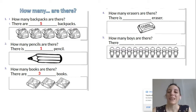How many erasers are there? There is one eraser. How many boys are there? There are 12 boys. Now we forgot to put the S on the end of this word. Because it's plural, we need to add an S right here. There are 12 boys.